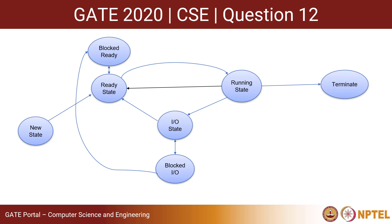Looking at all the options and based on this transition diagram and the movement of the processes, the correct option will be option C. Thank you.